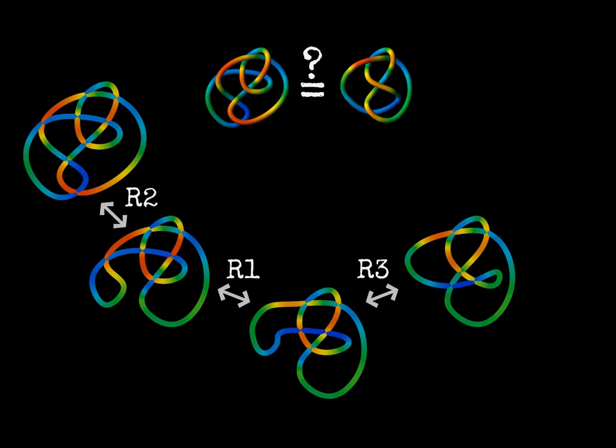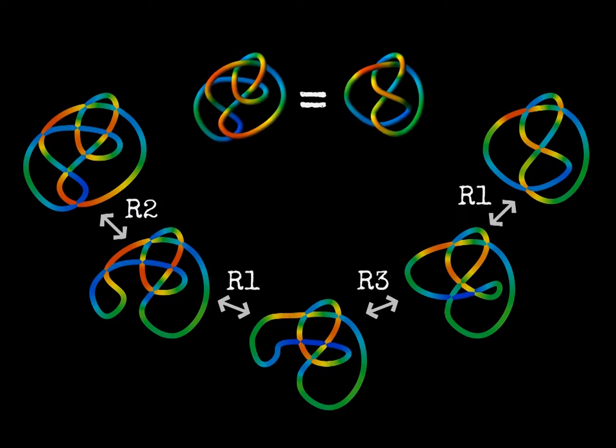Using Reidemeister theorem we can only prove that two diagrams represent the same knot, finding a sequence of moves. But we cannot prove that some knots are truly different. We need other methods to tell knots apart.